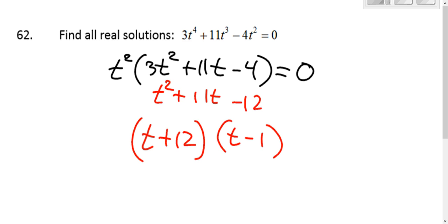Since we're doing bottoms-up, that number 3 that was there at the beginning, we now have to divide. If it reduces, great, that's t plus 4. If it doesn't, then bottoms-up. 3t minus 1.